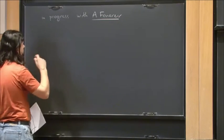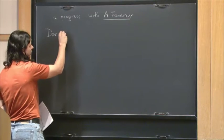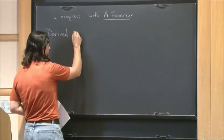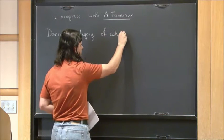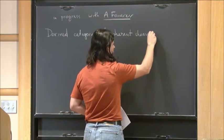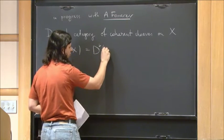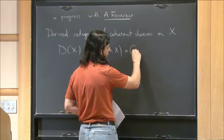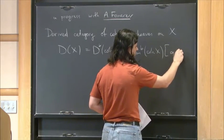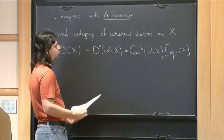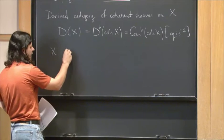Let me start with a couple of definitions, which are probably well known, but for completeness. When I speak about derived category, derived category means the derived category of coherent sheaves on some algebraic variety. I will denote it simply by D of X, but more appropriate notation is D^b of Coh X, defined as the localization of the category of bounded complexes of coherent sheaves on X with respect to quasi-isomorphisms. This is one of the central objects of algebraic geometry and homological algebra. I will typically assume that X is smooth and projective.